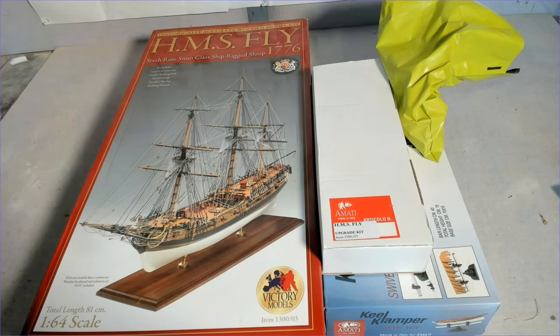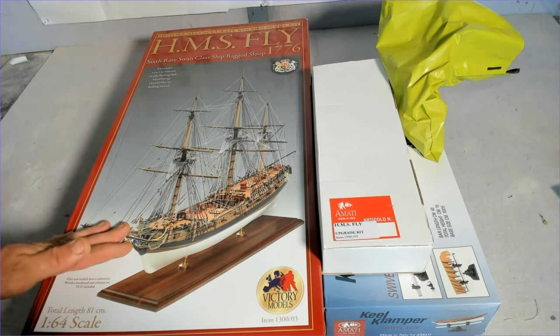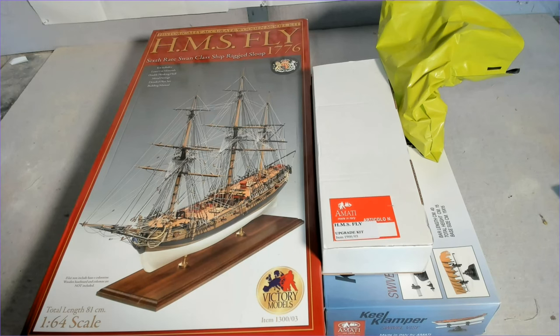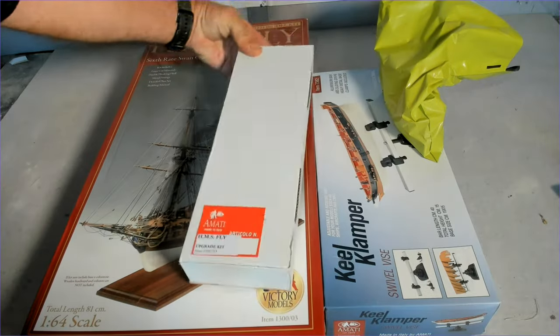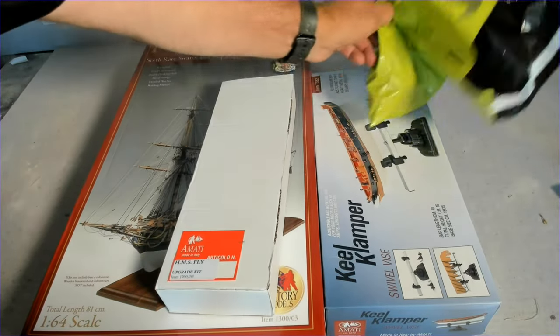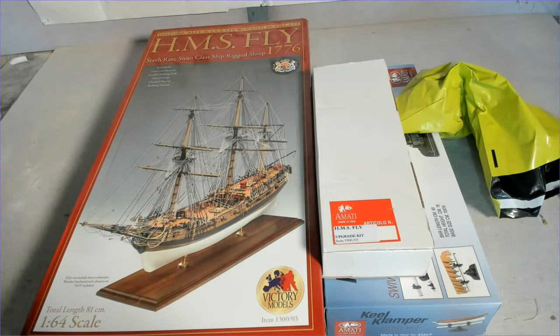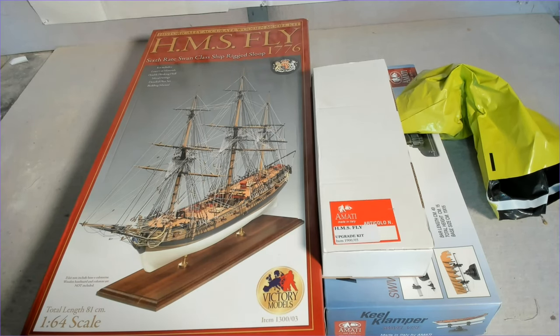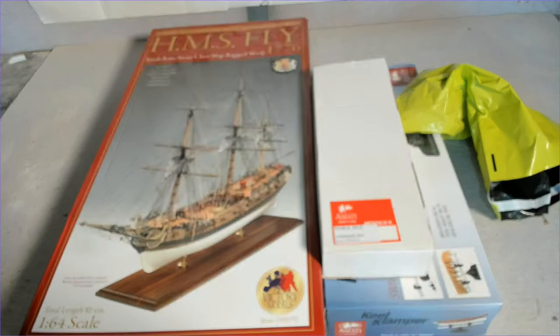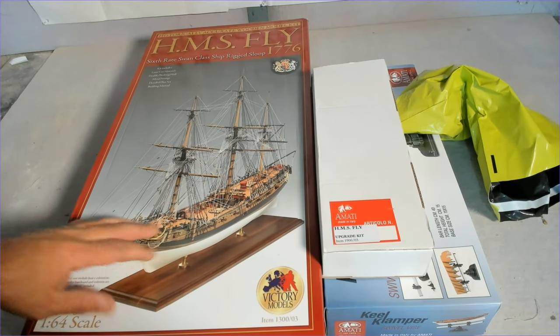G'day guys, welcome back. Today we're doing an unboxing of the HMS Fly, a Victory model ship which is basically a Mantua. I believe it's the same company. It's a 1:64 scale, 81 centimeters in length, a Swan class ship. I've got the upgrade set, the keel clamp, and the paint set that goes with this kit. I'll be doing an unboxing of each thing and I'll put some time tabs in the description so you can jump to whichever part interests you.